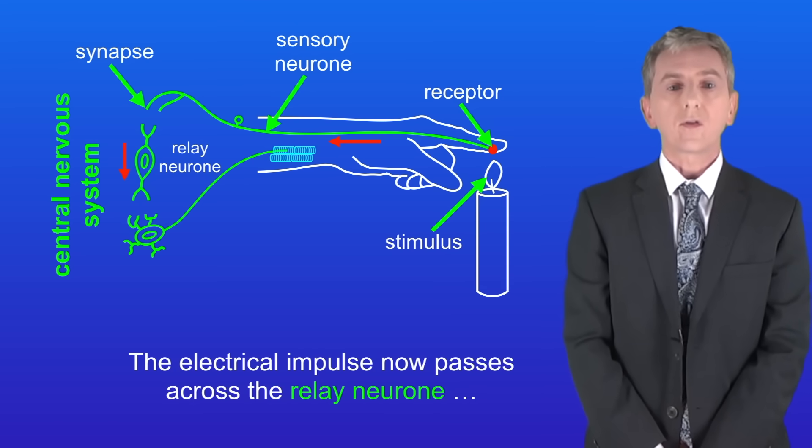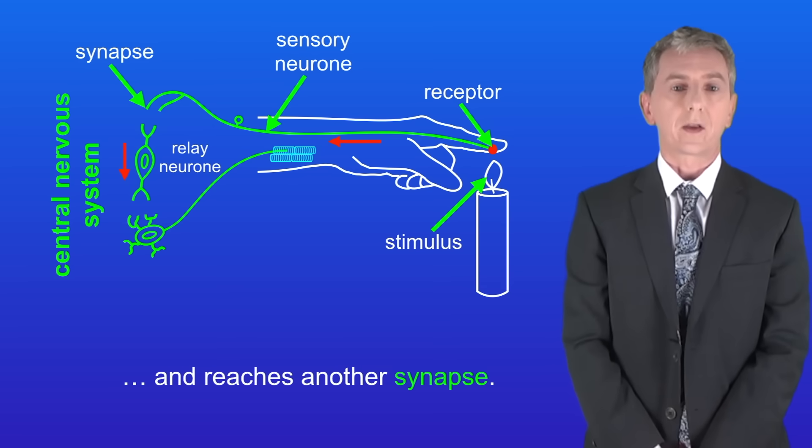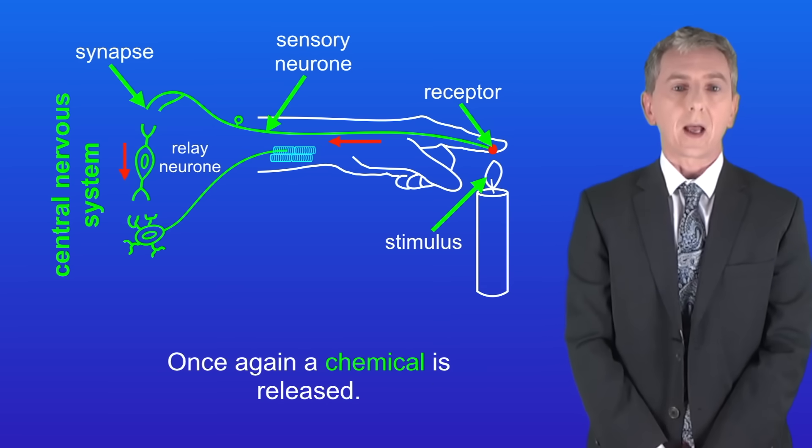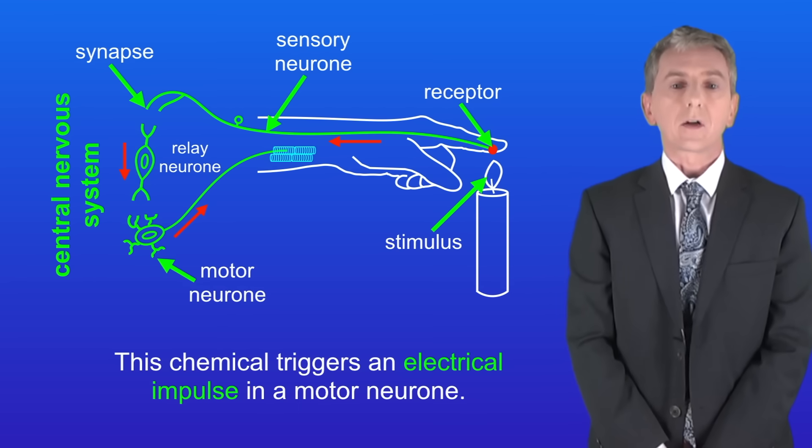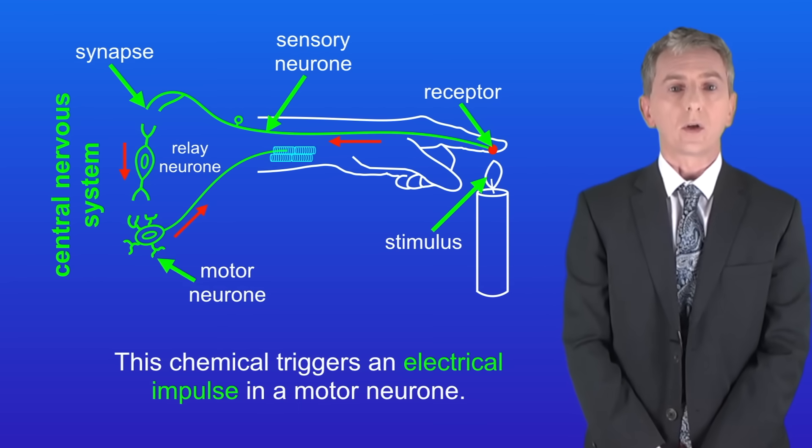The electrical impulse now passes across the relay neuron and reaches another synapse. Once again a chemical is released. This chemical triggers an electrical impulse in a motor neuron.